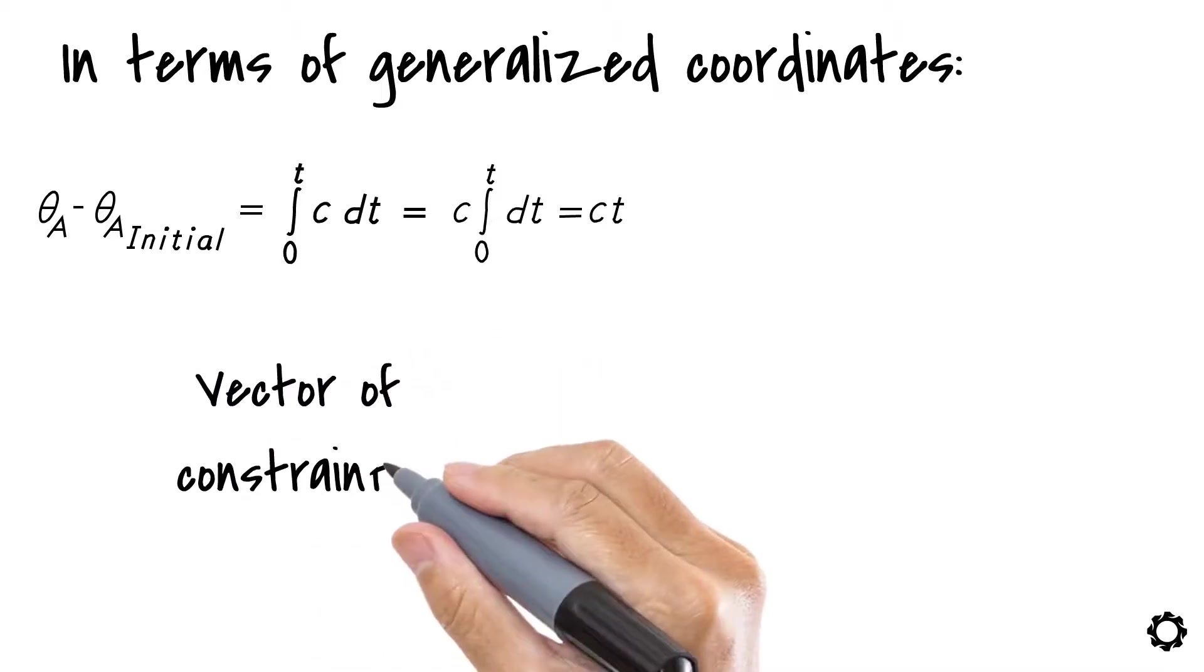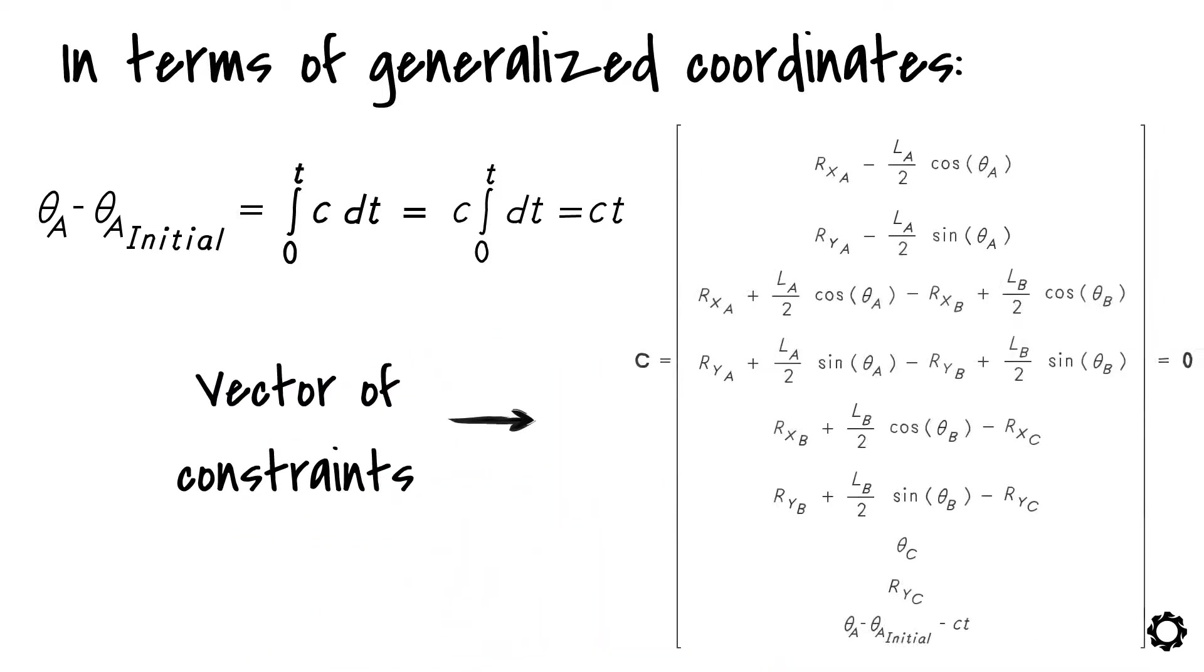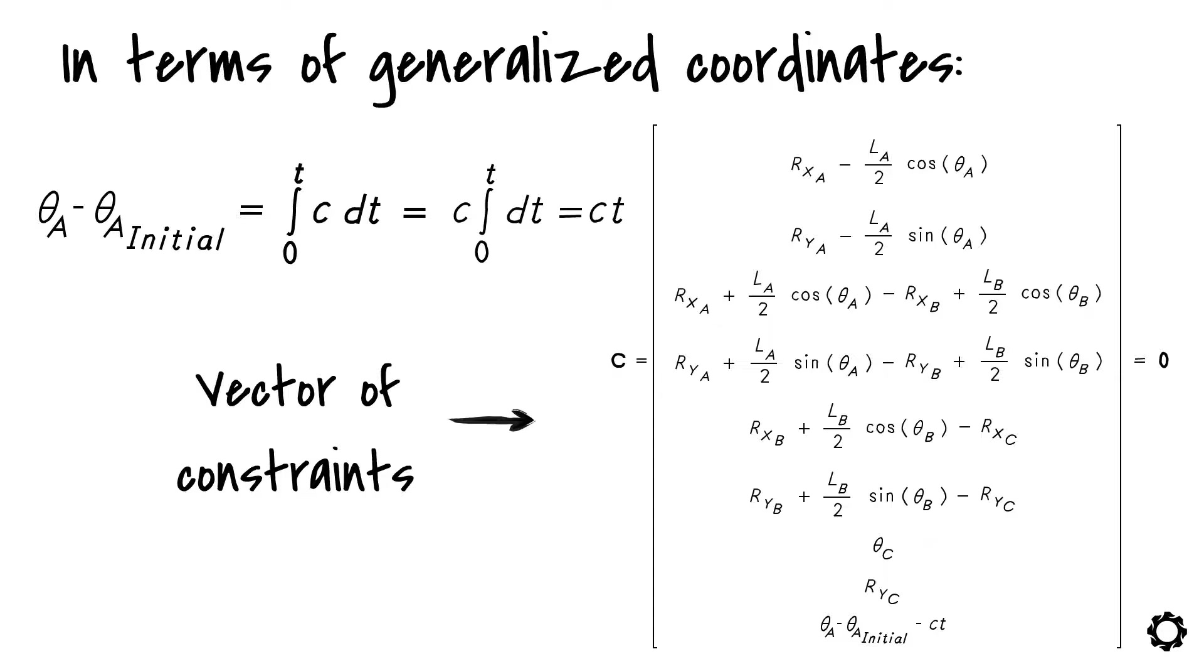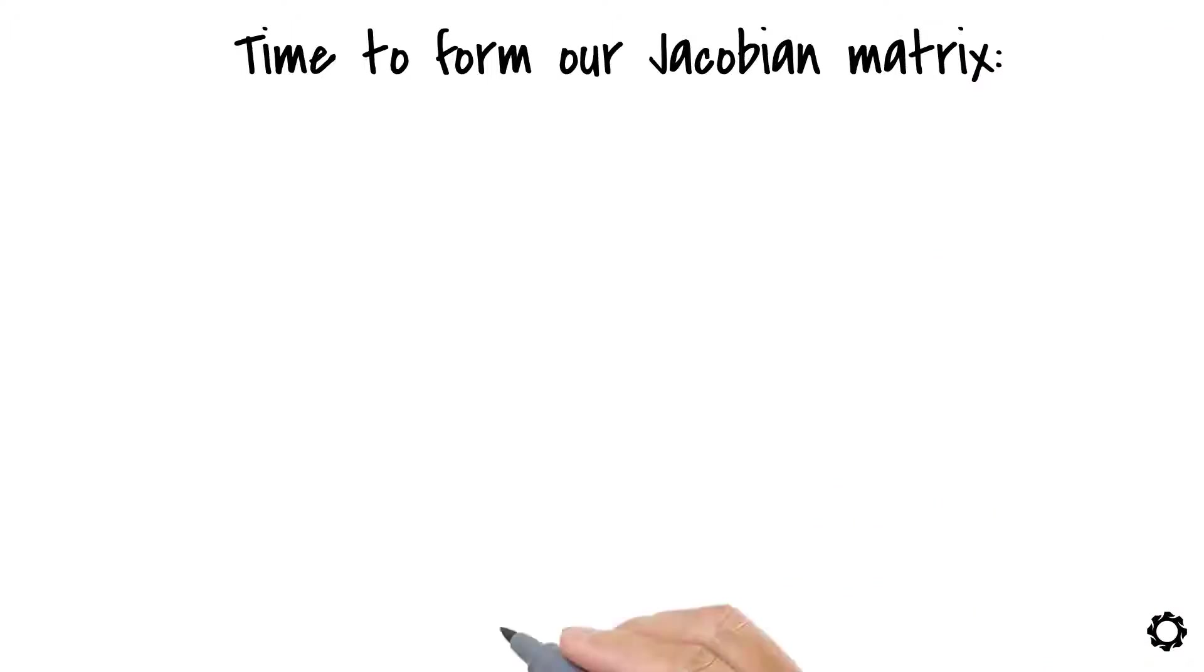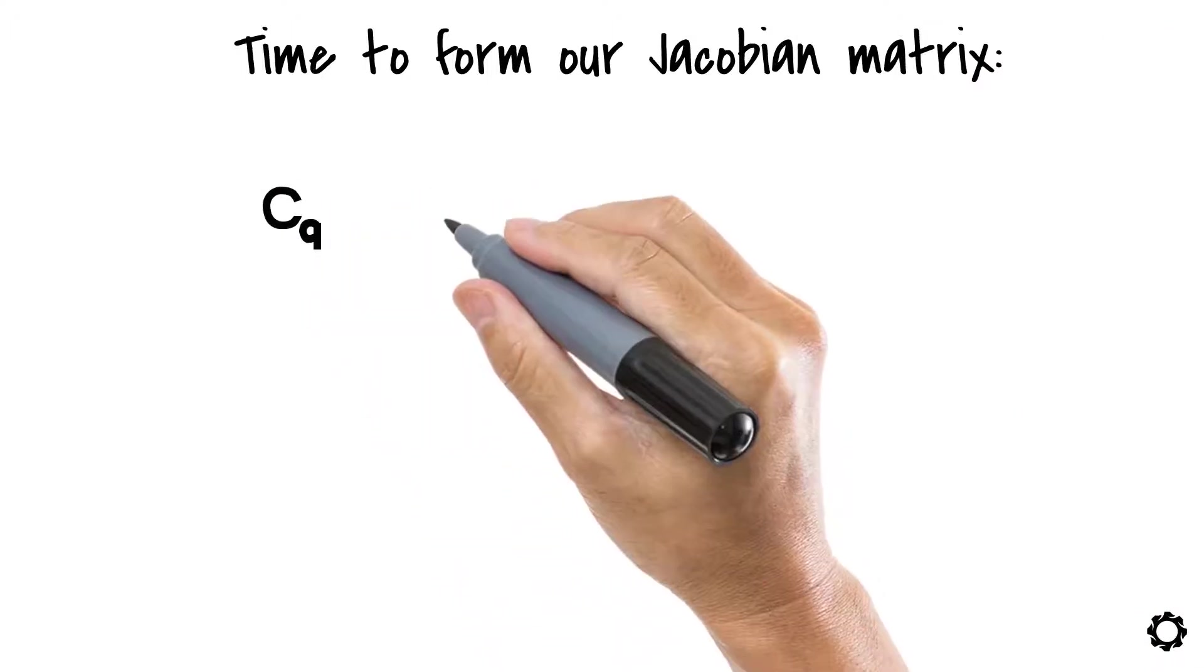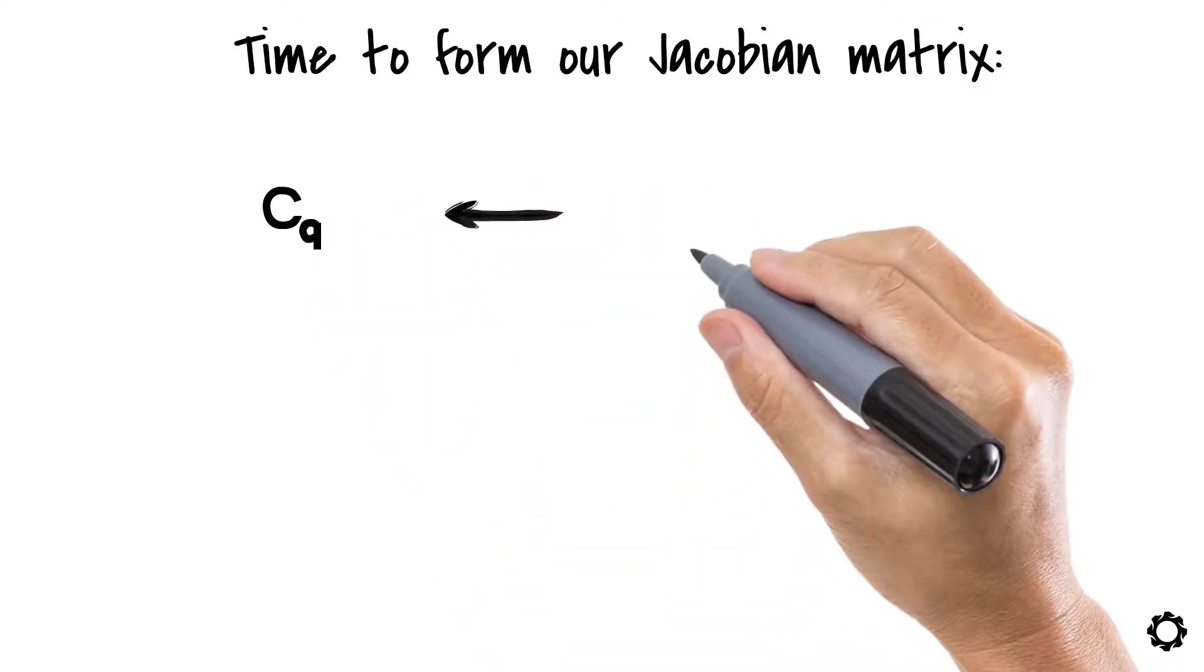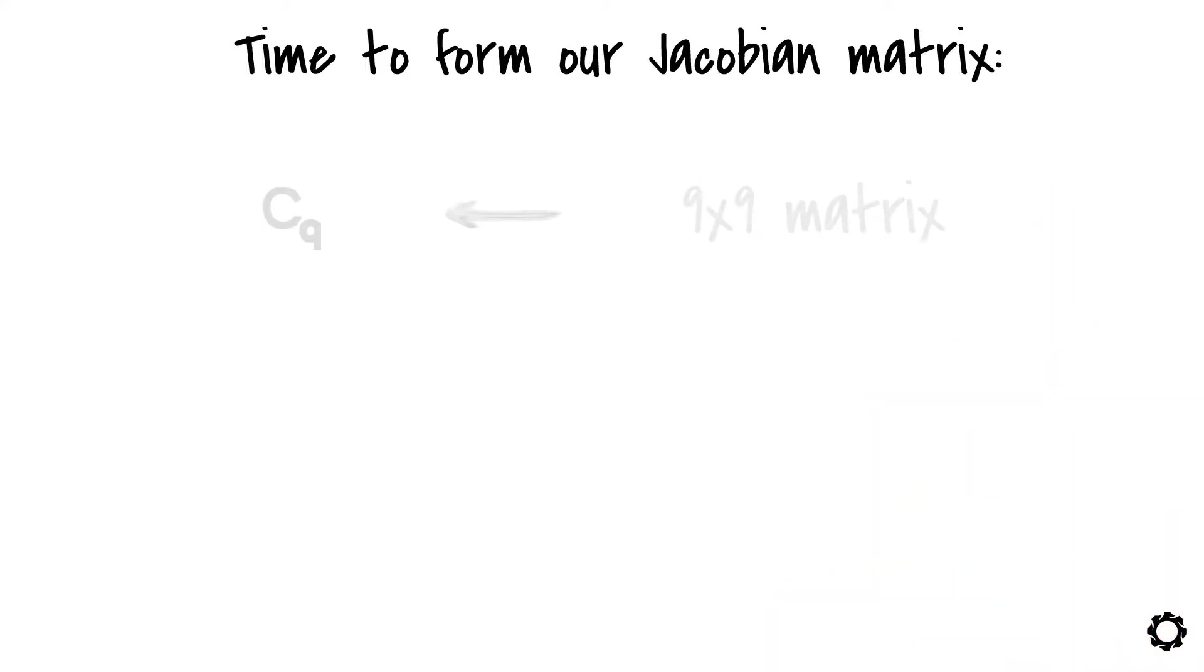Coming back to our vector of constraints, it will take the following form. Now would be the time to form our Jacobian matrix of the constraints cq. The Jacobian matrix of the constraints is a 9x9 matrix. It looks like this.